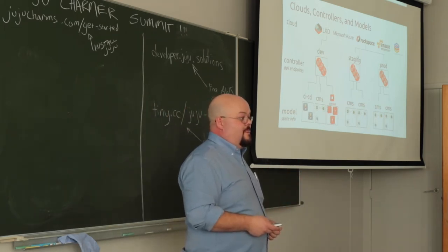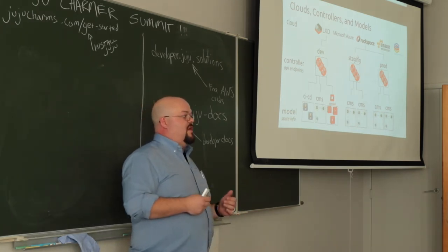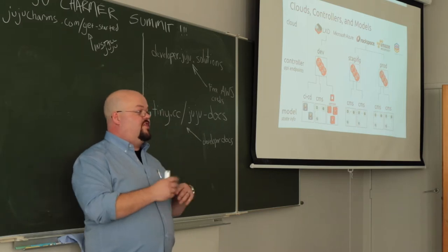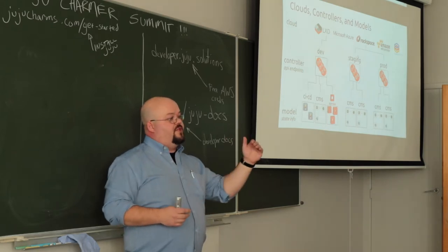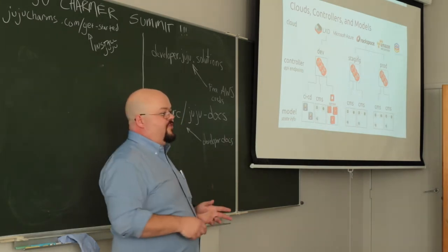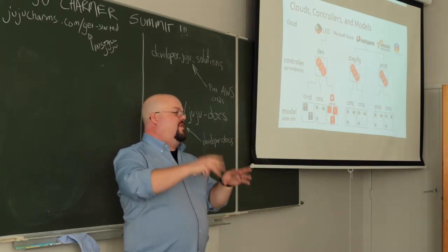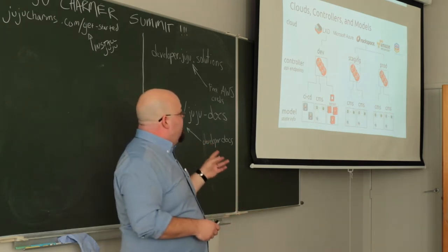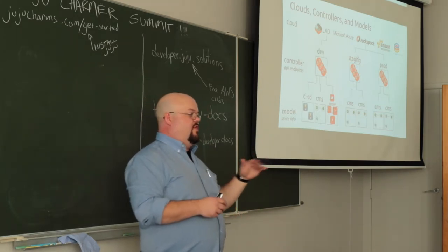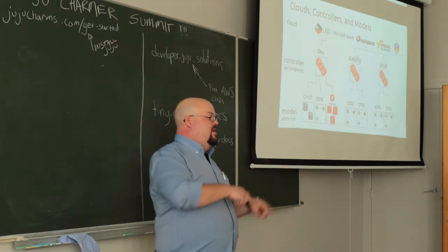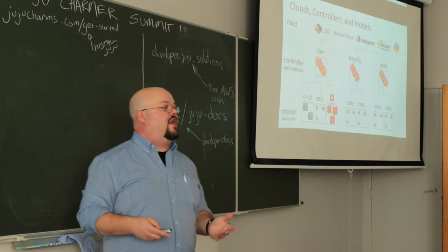The model name is just for you to address things. In 2.0 you actually switch between models to issue Juju commands. In 1.0 you'd switch between environments in your environments.yaml. Now you create the controller, give it a name, you can have many, and models live within the controller. You switch between models within a controller. It's basically like folders — keeps your stuff organized and gives you good visibility on what you're actually operating.